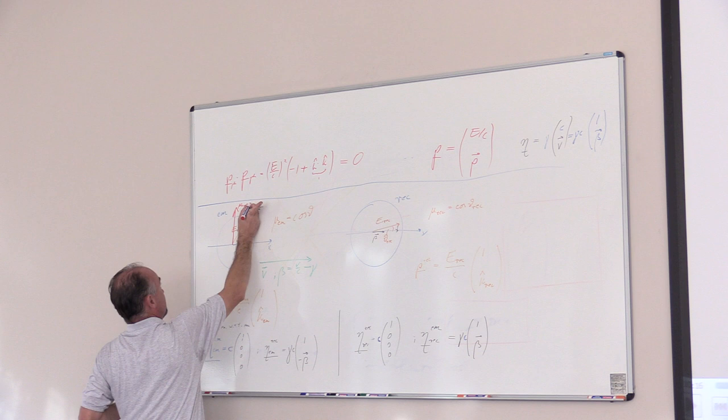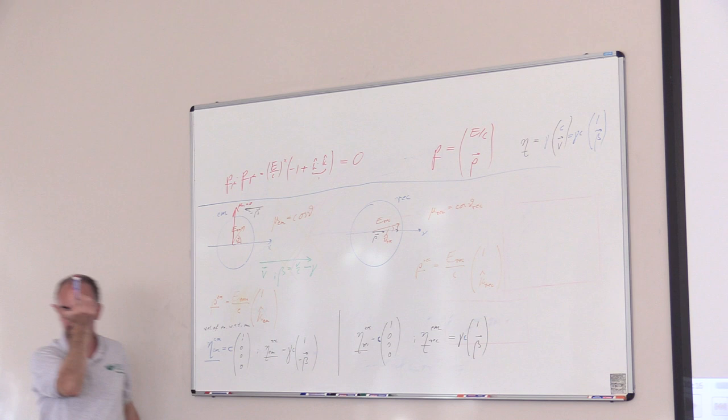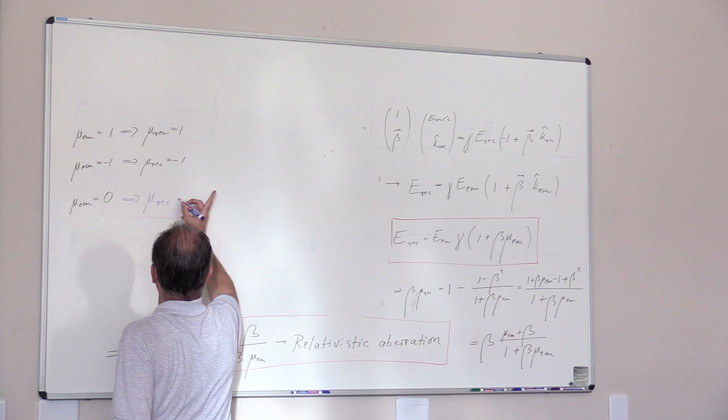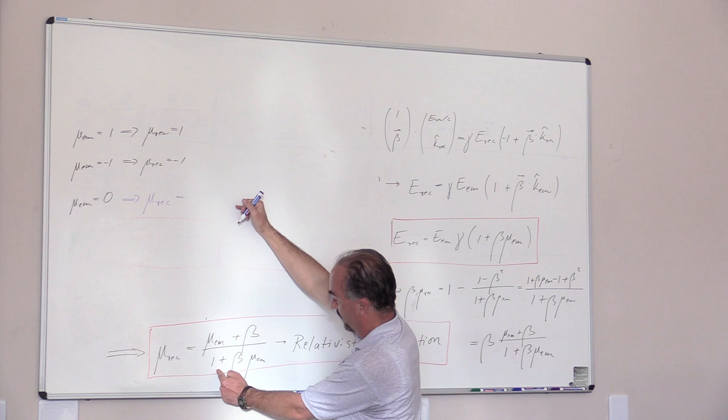So let's consider a photon that is emitted in our frame here at a right angle. So this would be μ emitted equals 0. The angle is 90 degrees, the cosine is 0. Then what do we get? Then we have μ in the receiver's frame equals, that is 0, is β over 1 plus 0. So it's just β.